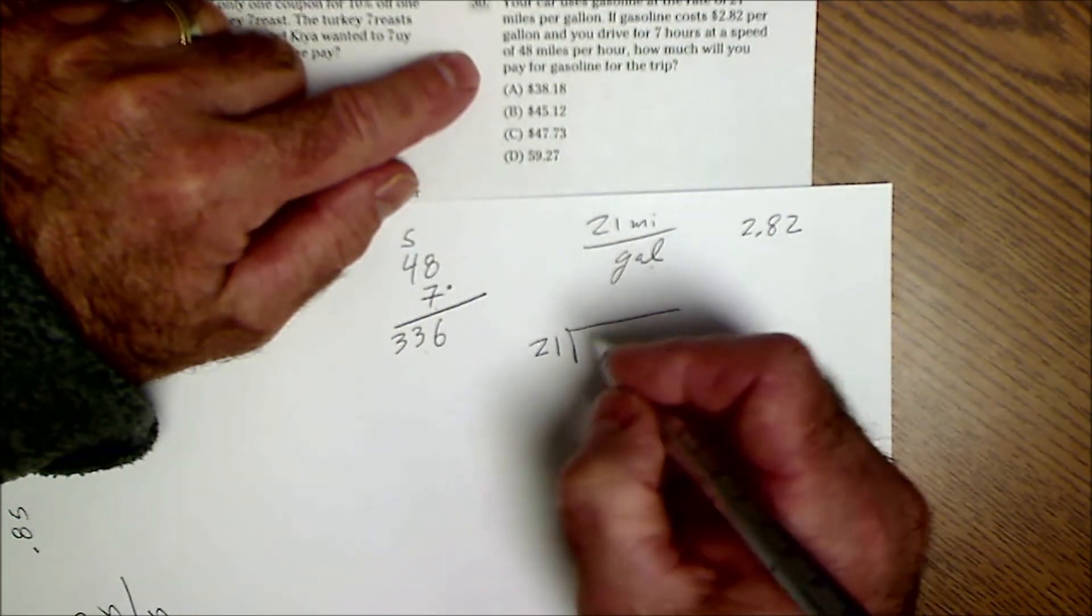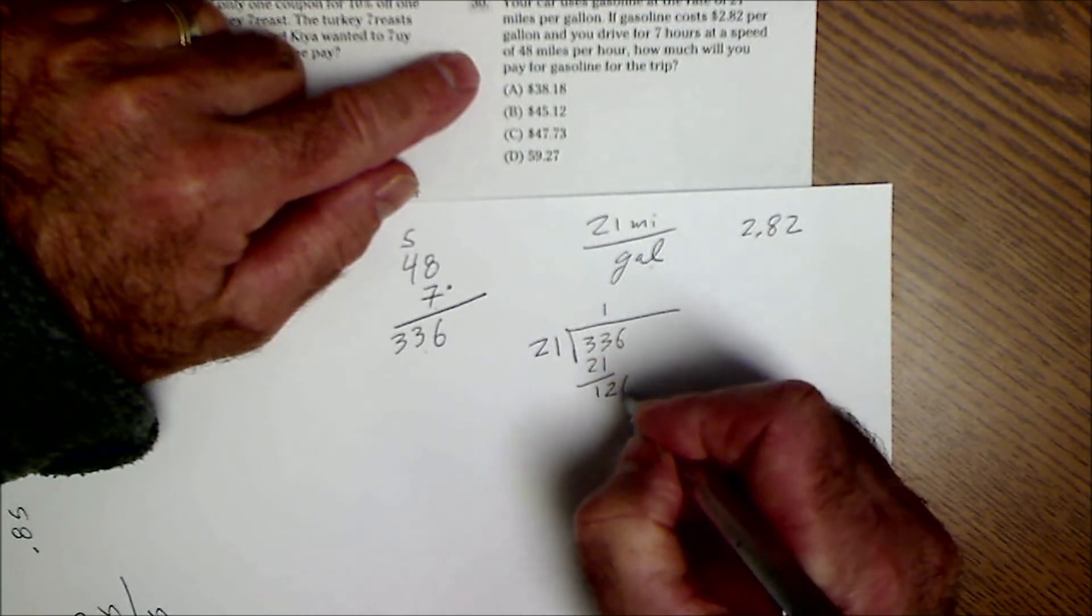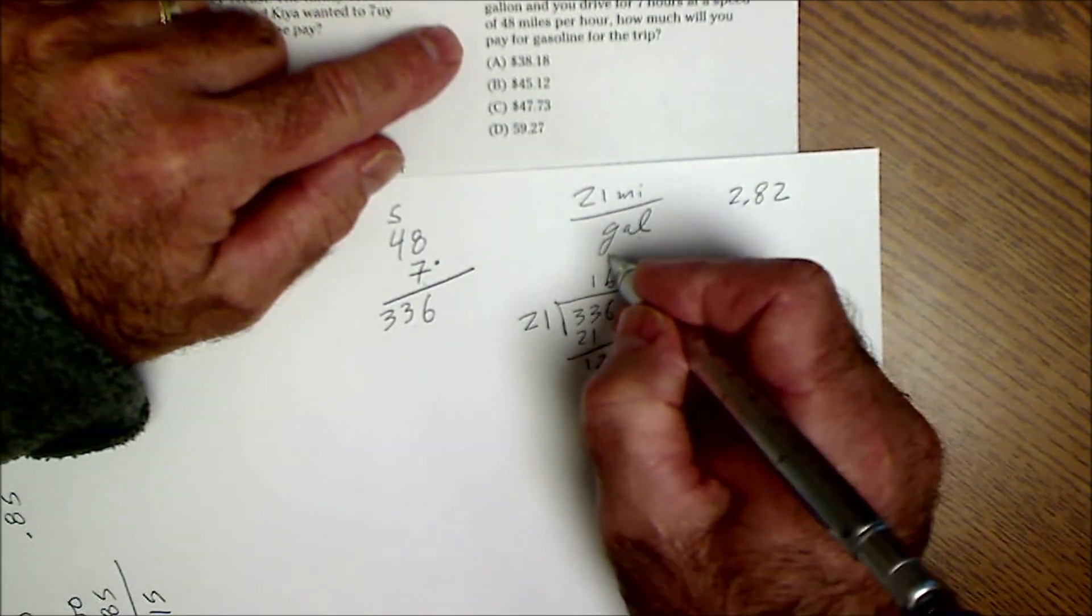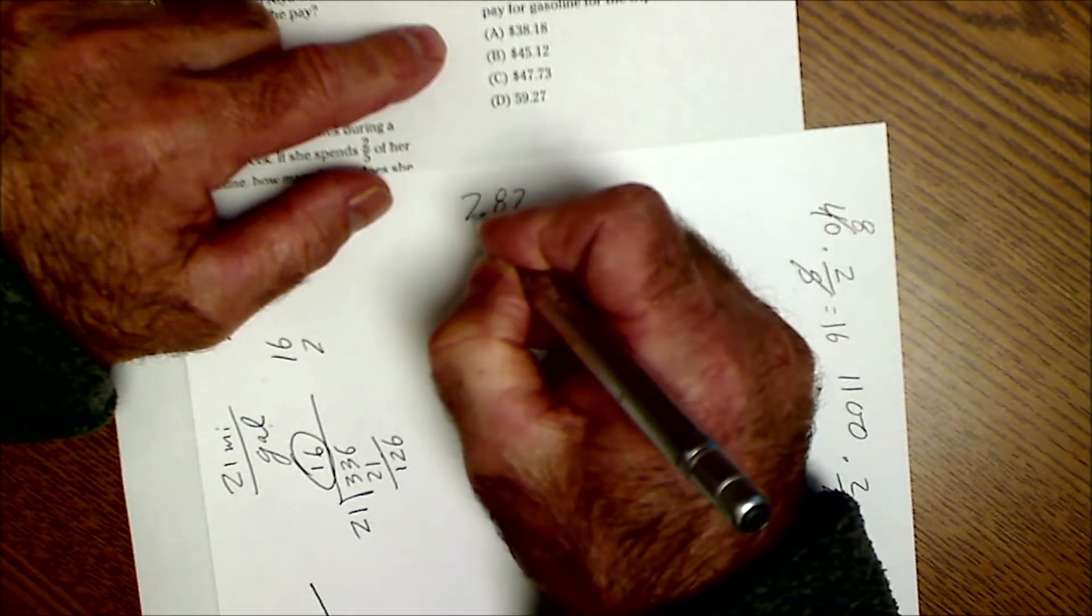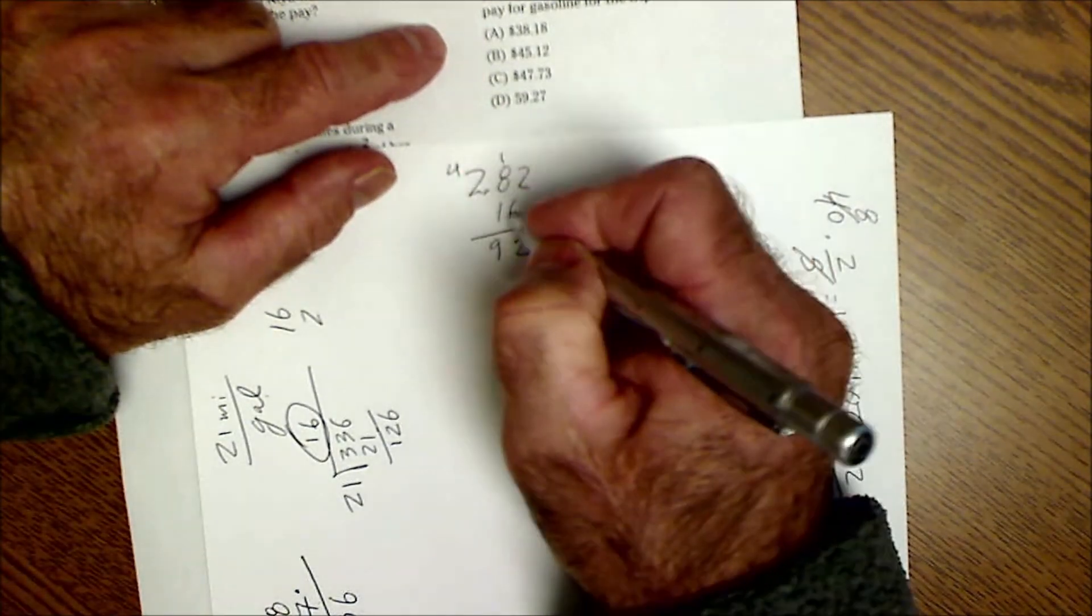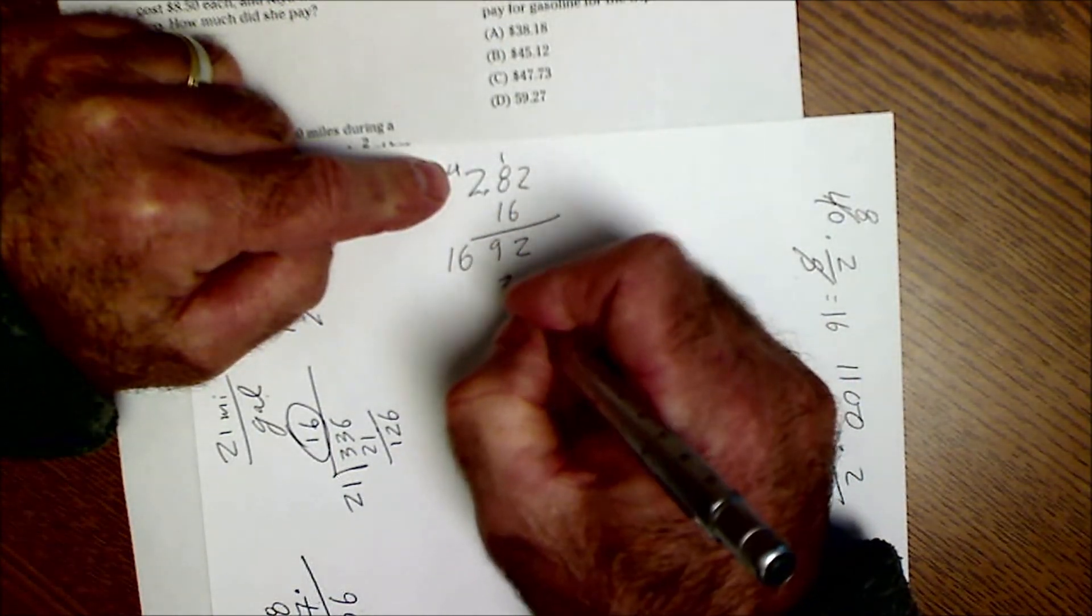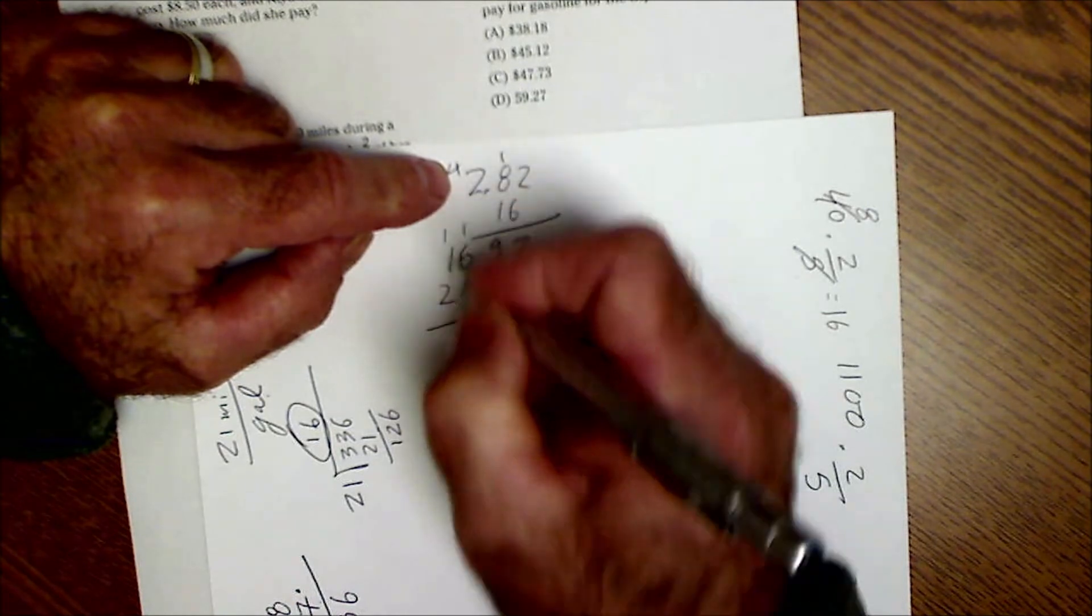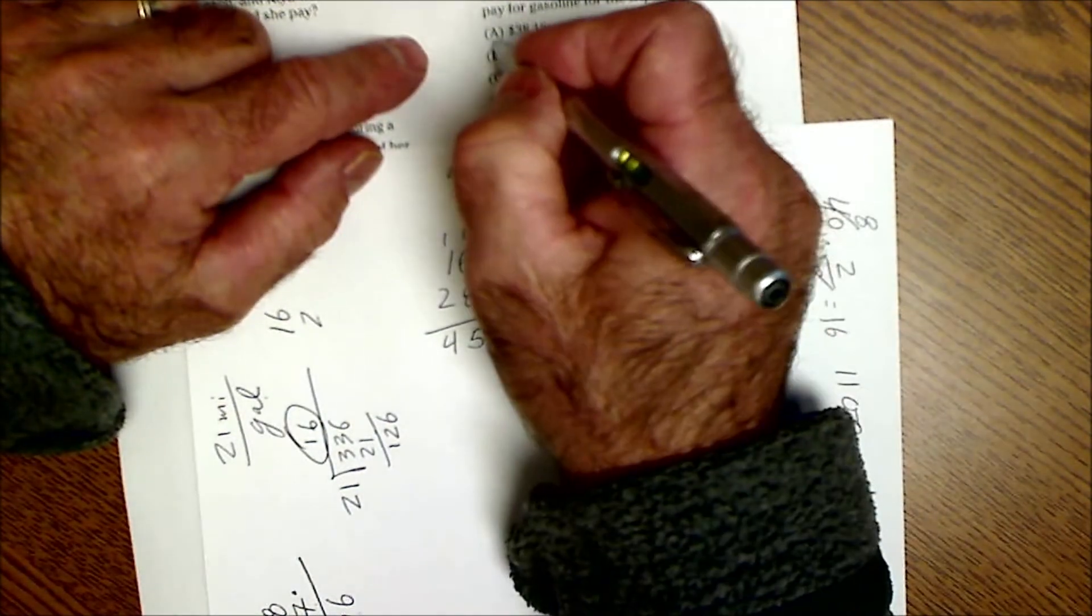I'm getting 21 miles per gallon, so 21 into 336 is once. 21, that's going to give me 126, that'll be 6. So I'm going to use 16 gallons of gas. 2.82 times the 16 gallons of gas. So that's going to give me 12, carry the 1, 48, 49. 12 plus 4, 16. Placeholder, 282. Add them together, 2, 11, 15. Carry the 1, 4. And then I got 45.12. So answer B is the correct answer.